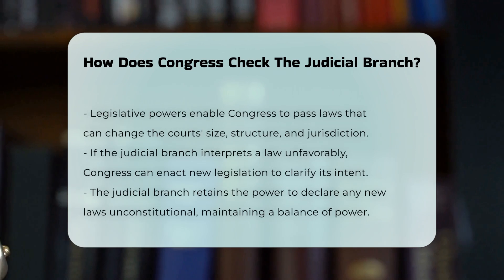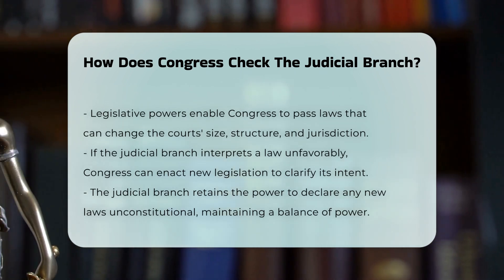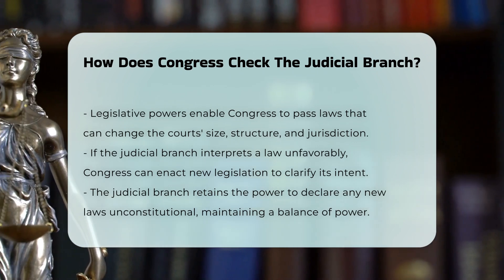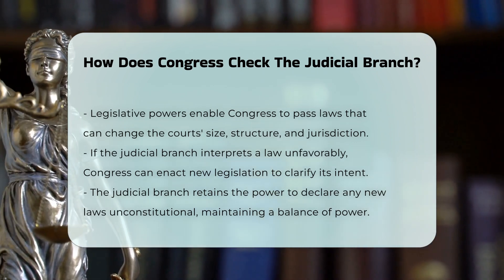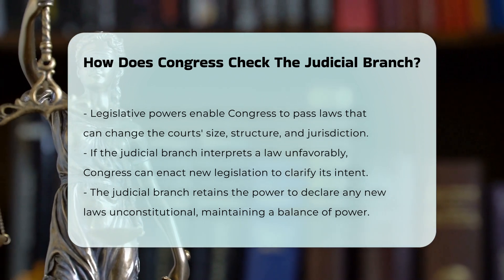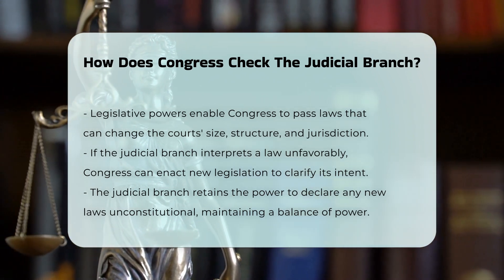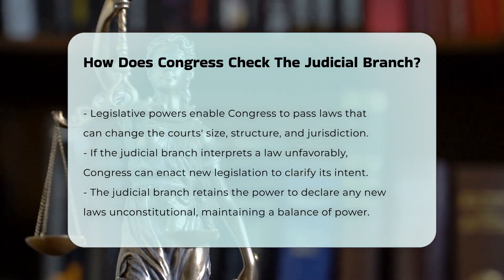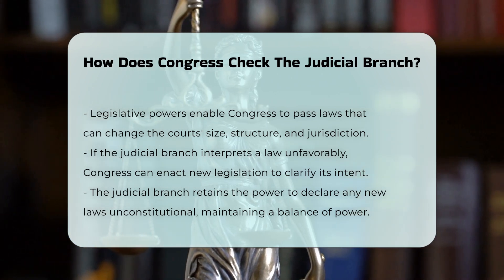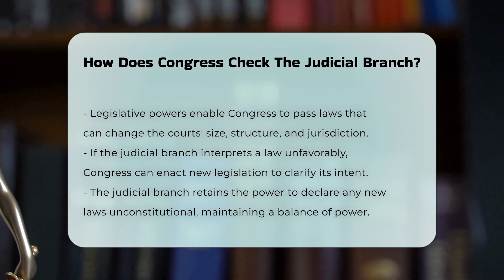Furthermore, Congress can influence the judicial branch through its legislative powers. For example, Congress can pass laws that alter the court's size, structure, and jurisdiction. If the judicial branch interprets a law in a way that Congress disagrees with, Congress can pass new legislation to clarify or change the law, although the judicial branch can still declare such laws unconstitutional.